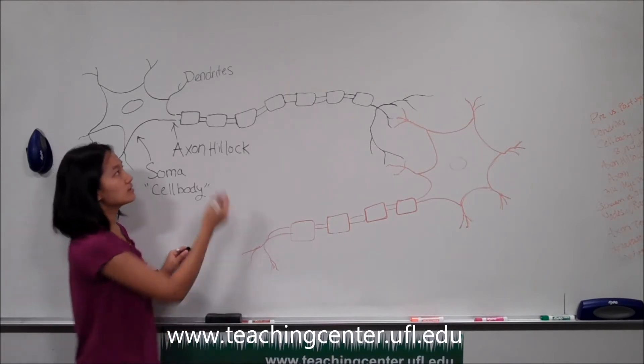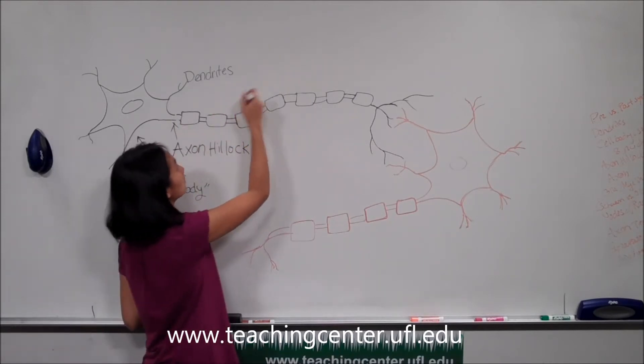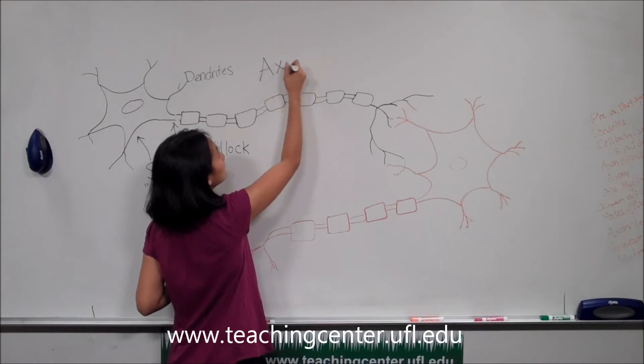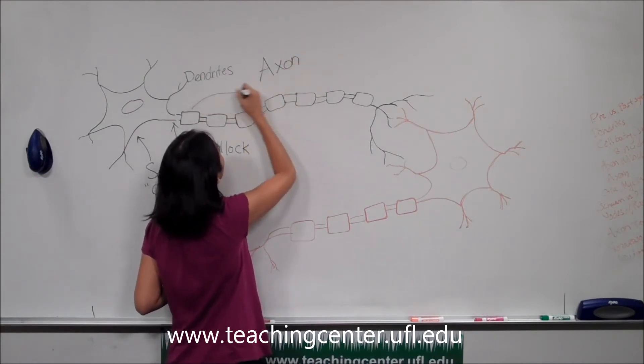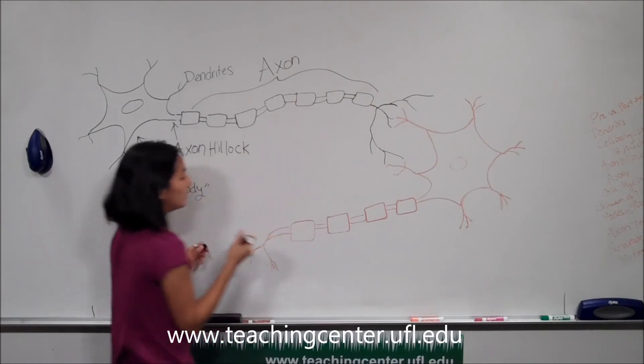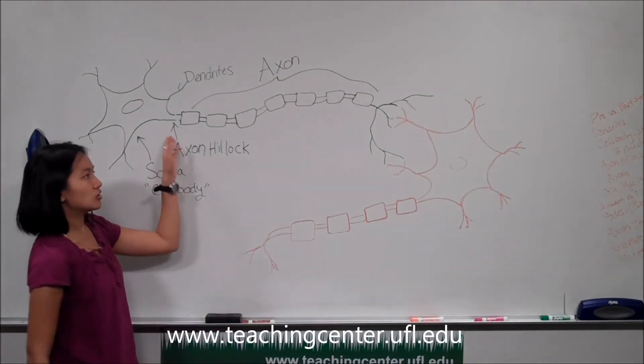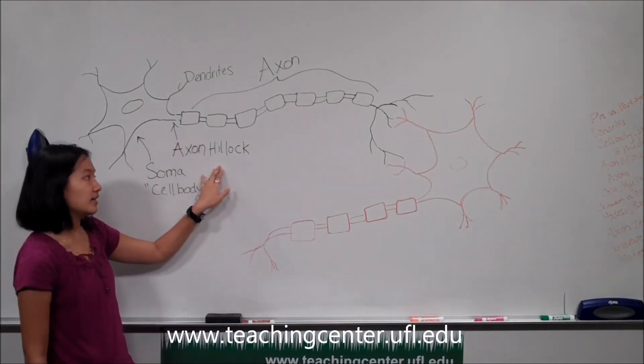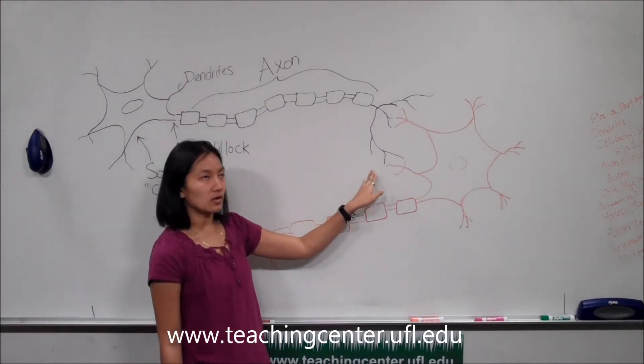Most neurons tend to have only one axon. And as you can see, the axon just carries the signal generated at the axon hillock down to the end of the neuron.